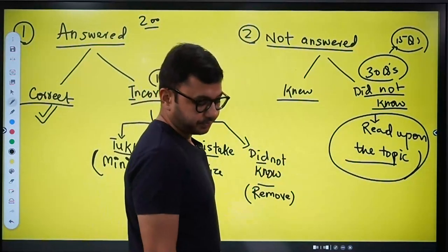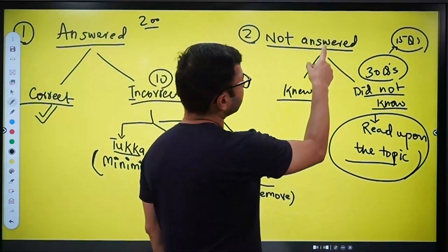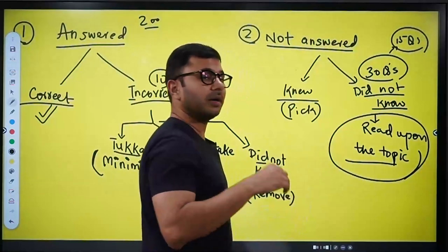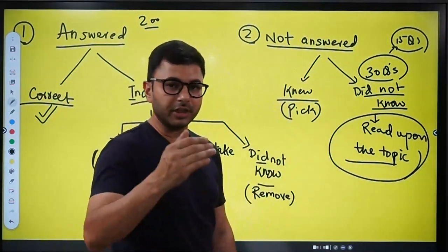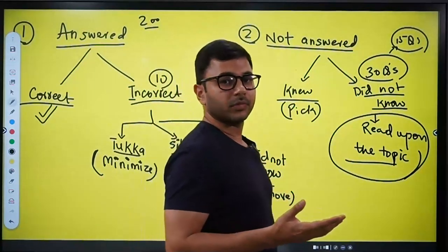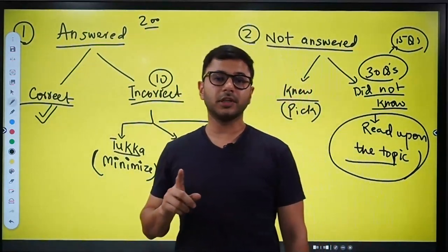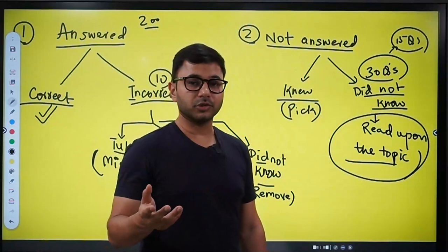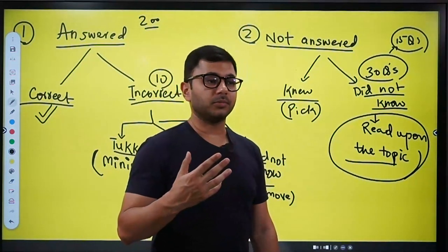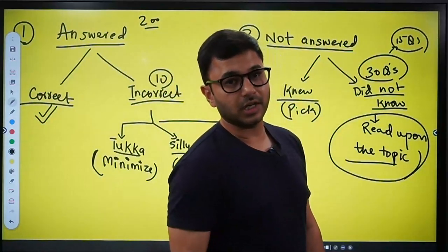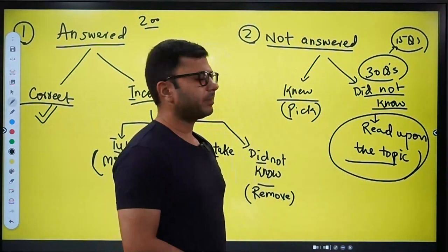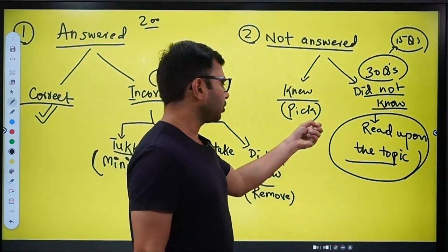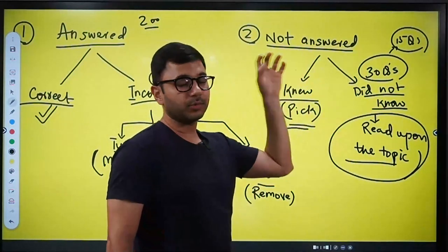And the last is, you knew about it, you have to pick these out, that I did not answer, but I knew it. So you pick these out, and you try and make sure that in the next test, you reduce their number. You try and reduce their number. That I knew it, I knew the answer, but still I did not answer it, probably because I was not very certain, probably because I was a little scared, I was thinking that if this goes wrong then what will happen. Probably because you were not sure about it, that answer is A or B, there was confusion. There might be a lot of reasons, and you would know when you read upon a question again, when you revisit a question, but you have to try and reduce their number, that I know it, and I am not answering.